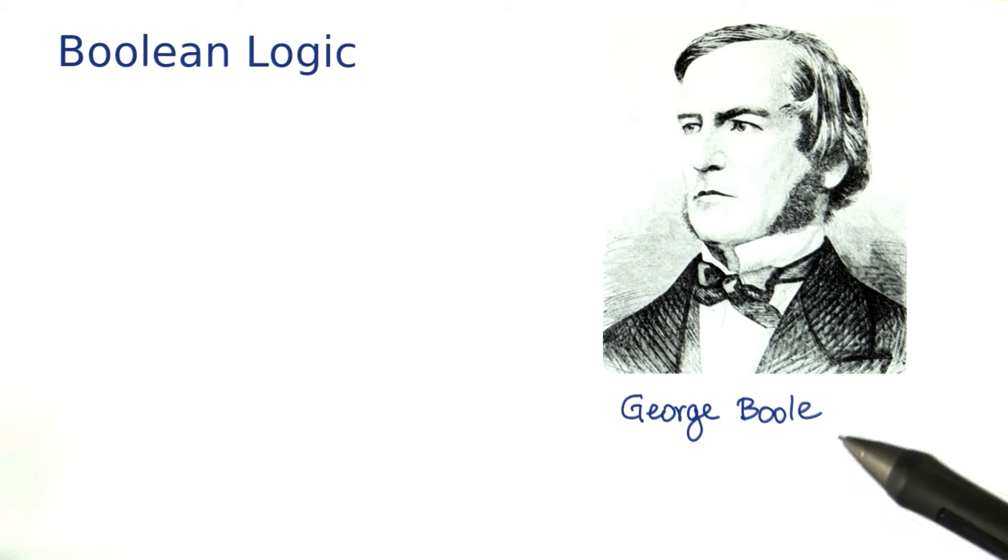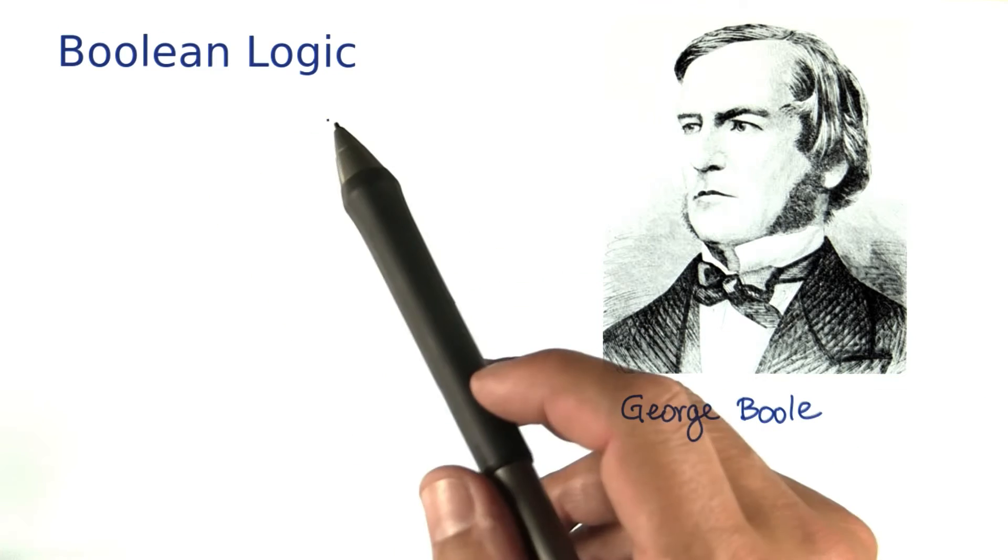His name is George Boole, and he figured out the rules for working with conditions that could be true or false. And ever since, that's been called Boolean logic.